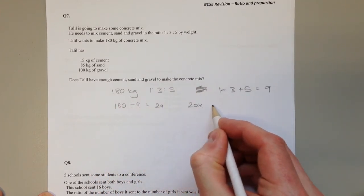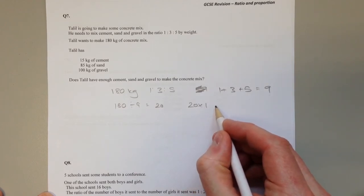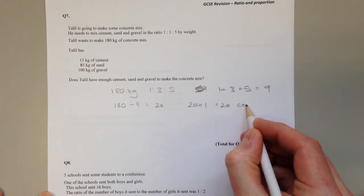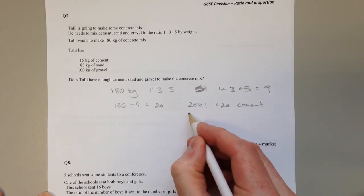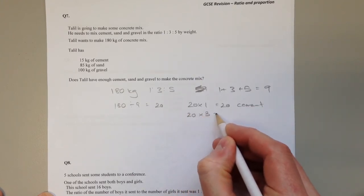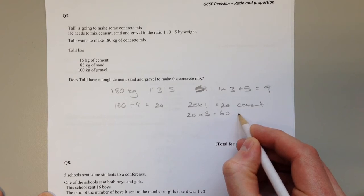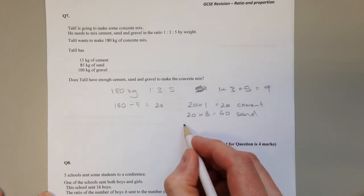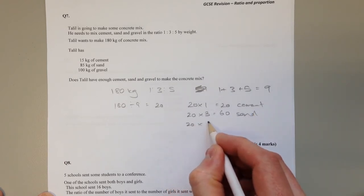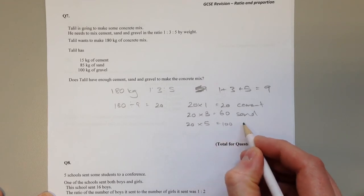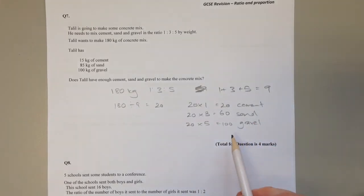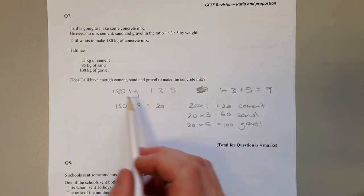Therefore we need 20 lots of 1, which is 20 kilograms of cement. We'd need 20 lots of 3, which is 60 kilograms of sand. And we'd need 20 lots of 5, which is 100 kilograms of gravel.